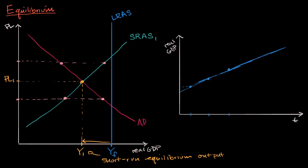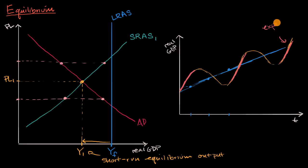But we know that's not the way real economies work — they experience the business cycle, which looks more like peaks and troughs: a boom and bust cycle. The parts of this curve where real GDP is increasing we would call expansions — economic expansion. And the parts where GDP is receding we would call recessions.